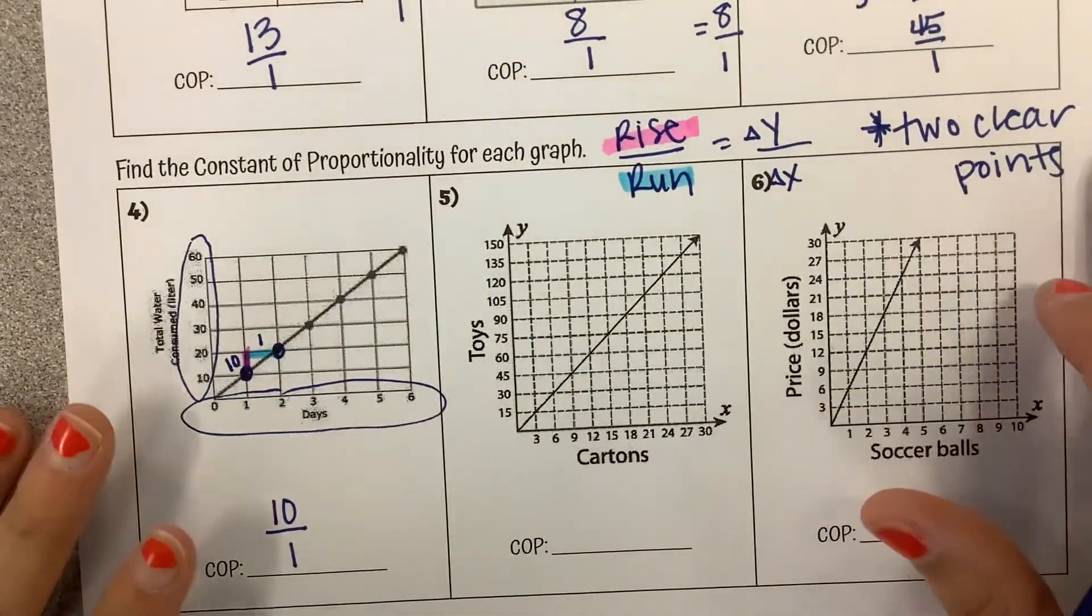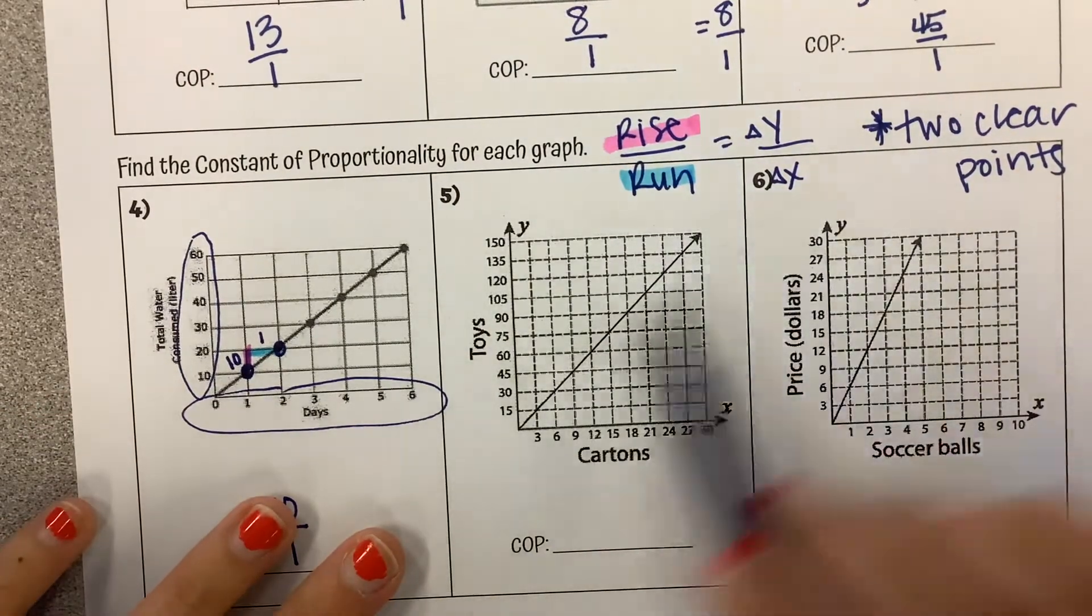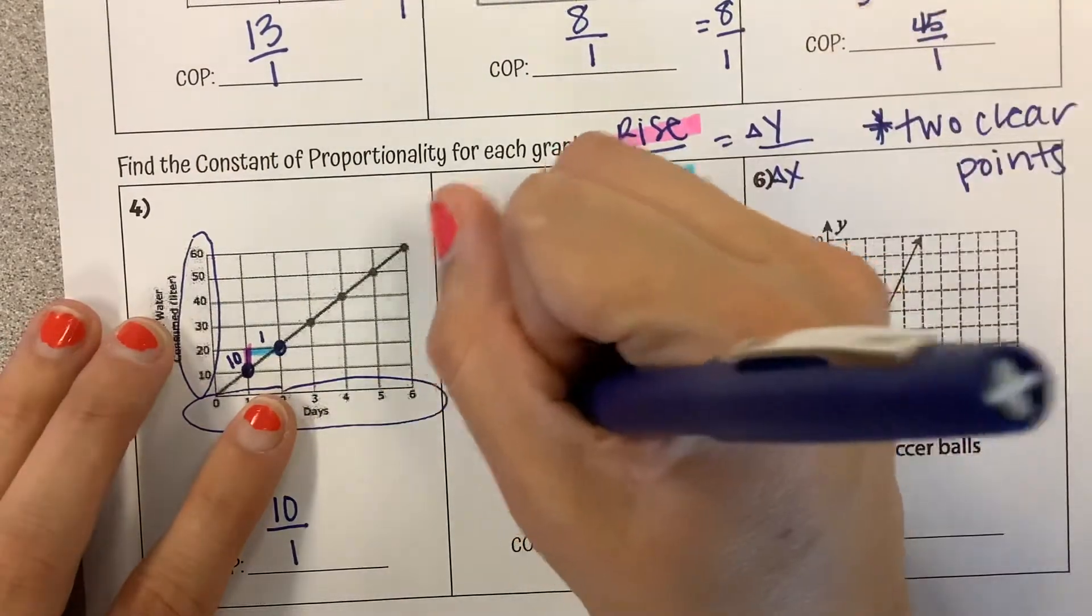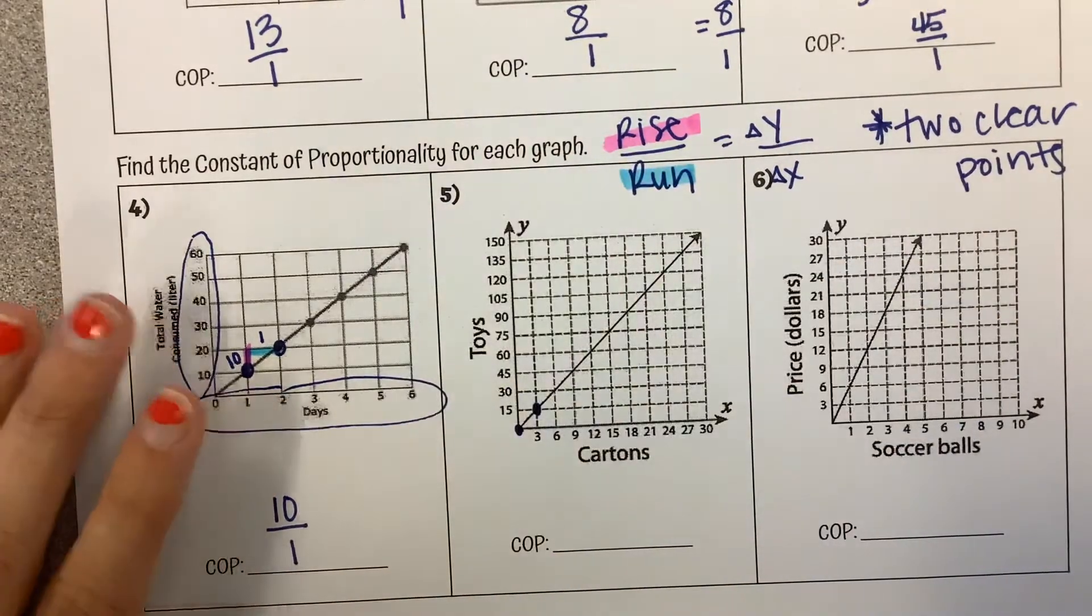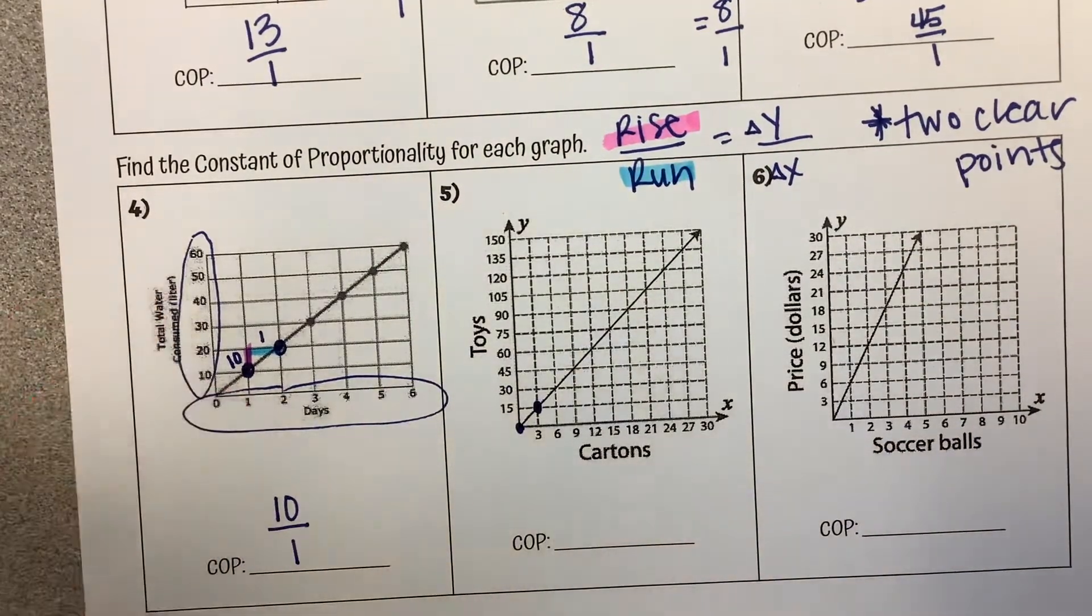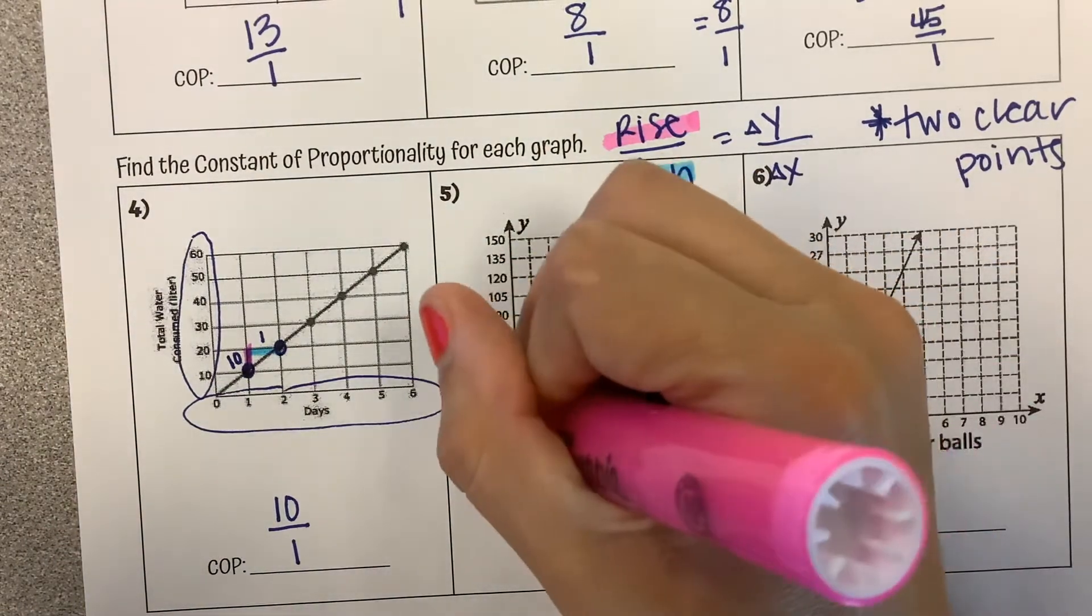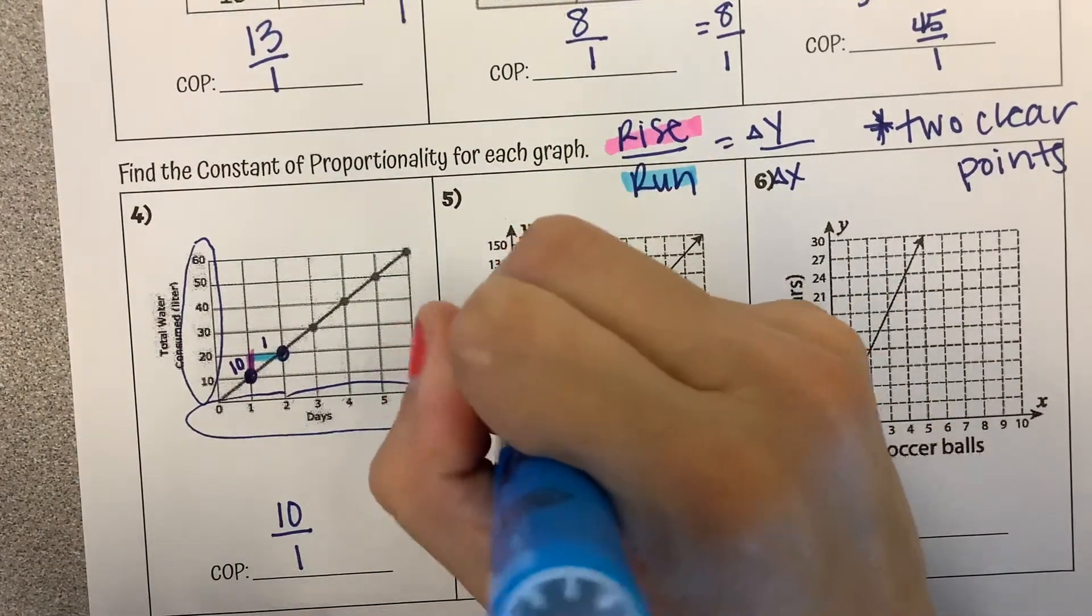Number 5. Same thing. I'm going to pick clear points. They aren't noted on here like the other ones. So I'm just going to see where things cross at a clear point. So maybe I pick these two points right here. So we've got our rise right here over our run right here.